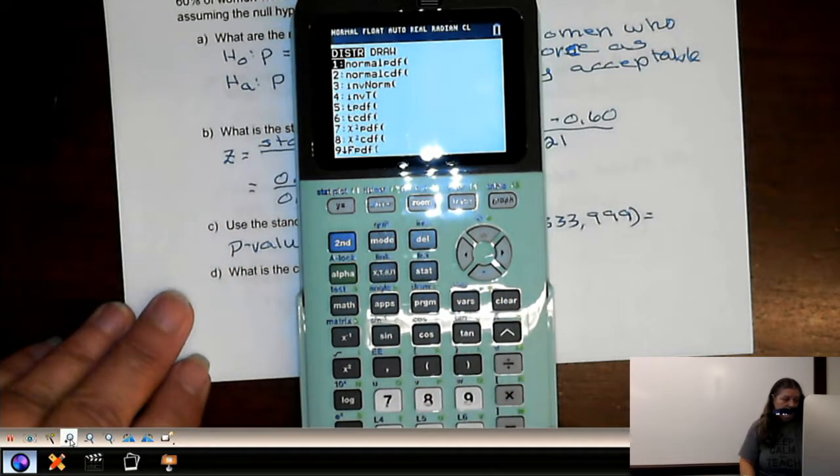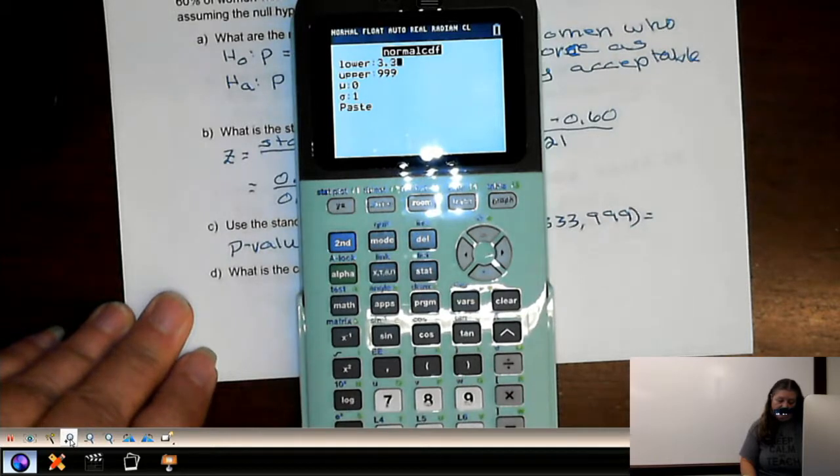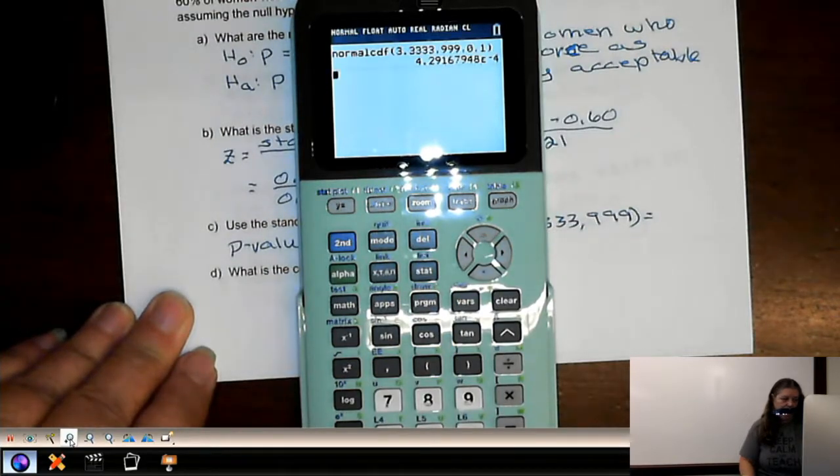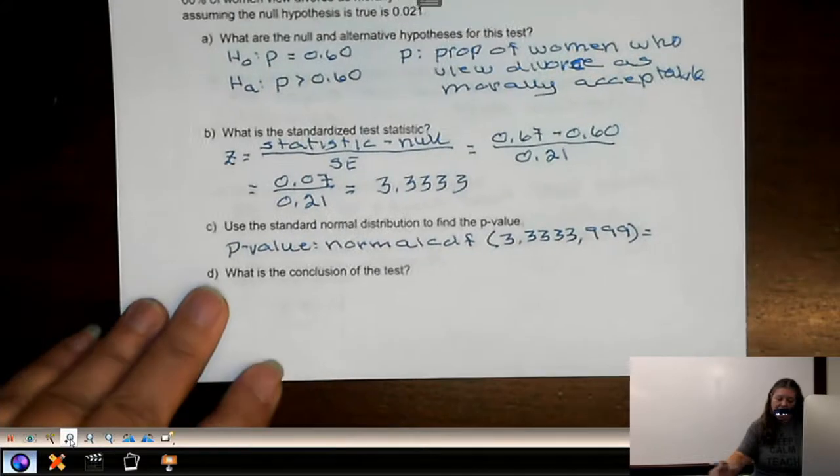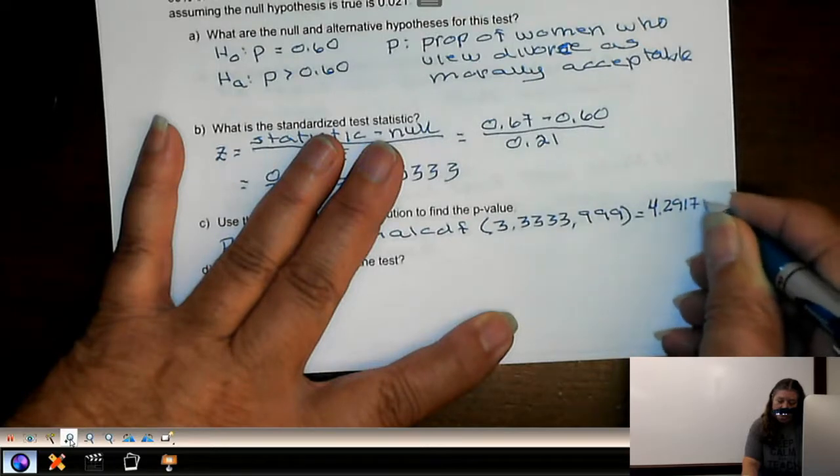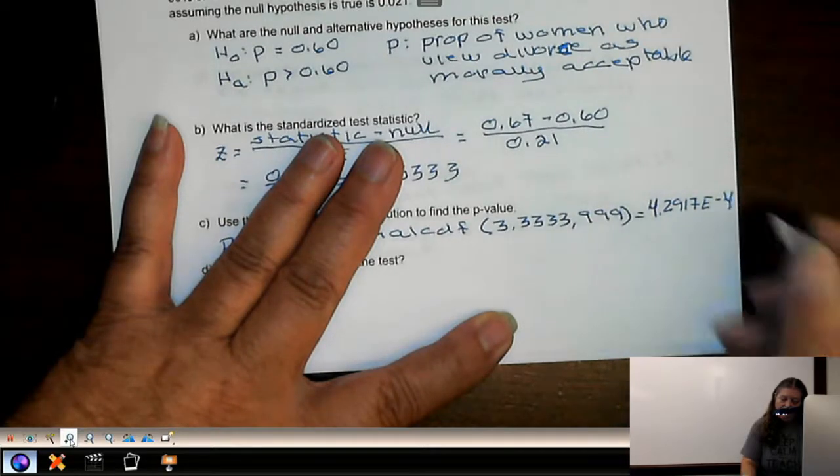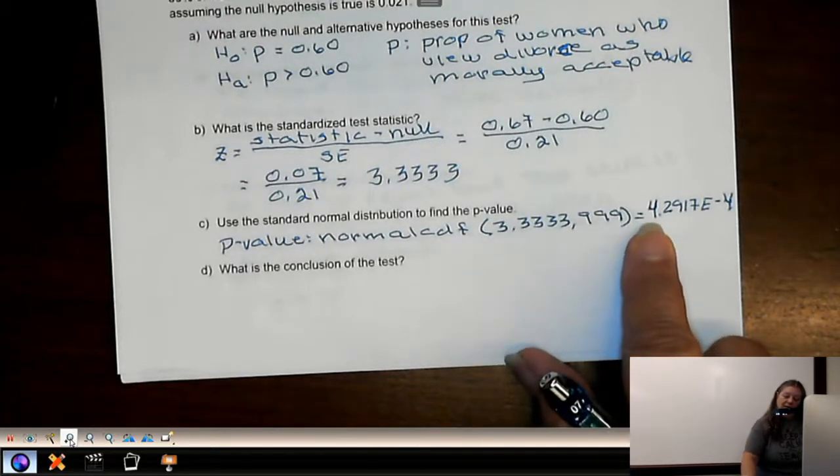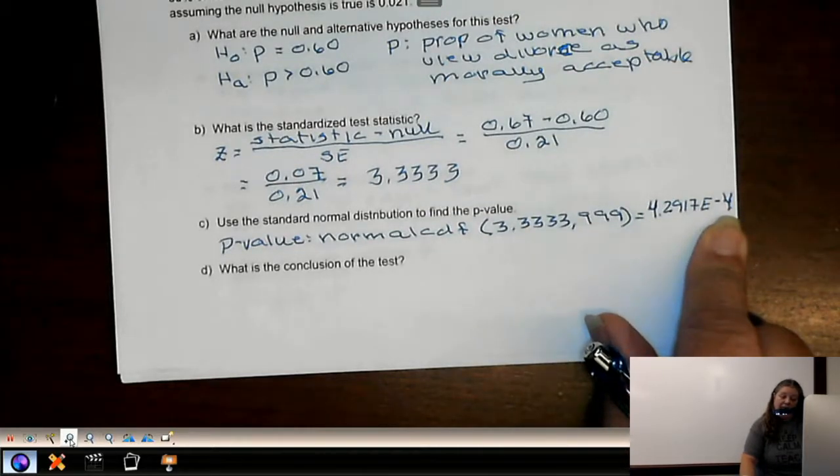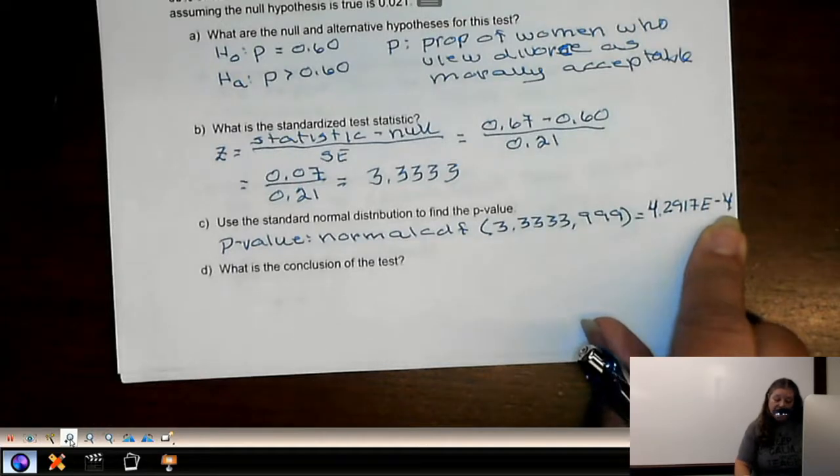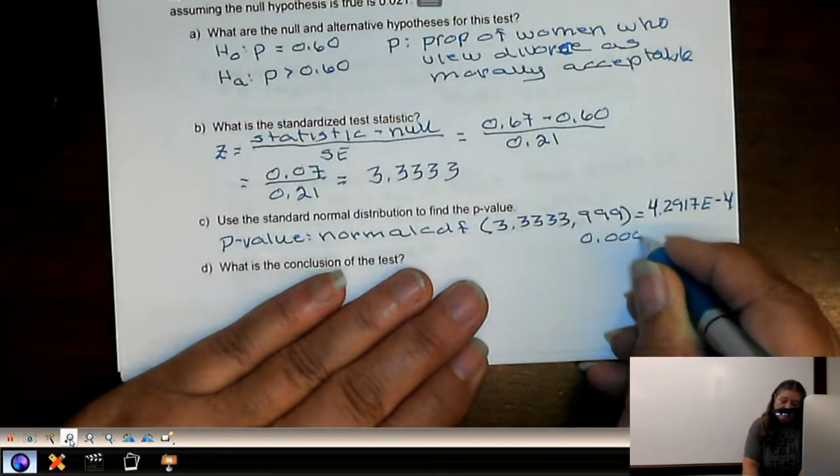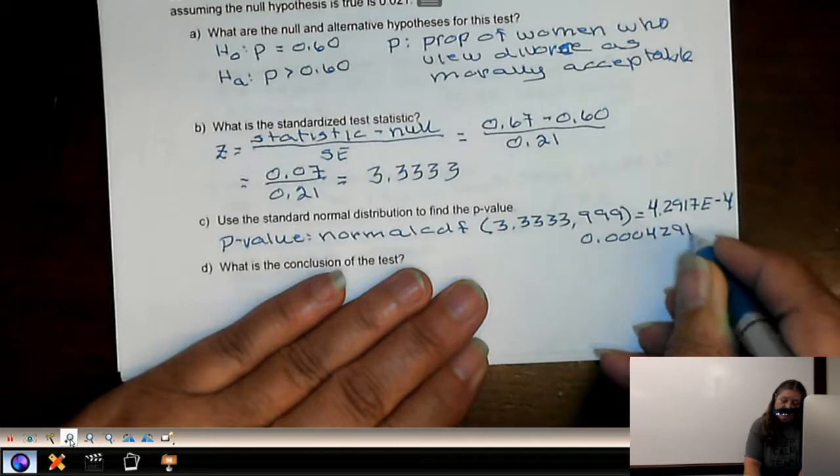So second VARs, normal CDF, 3.3333, 999. And we get 4.2917e negative 4. Because the p-value is a probability, if you have anything other than 0 to the left of the decimal point, then you should be looking for that negative exponent. It has changed it to scientific notation. This would be equivalent to 0.00042917.